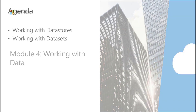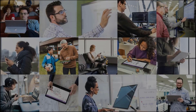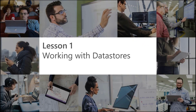Data is the most important thing in machine learning. In Azure, we have two concepts: data store and data set. Let's start with the data store first, then we'll go towards the data set — we'll see what it means, how to work with it, and so forth.